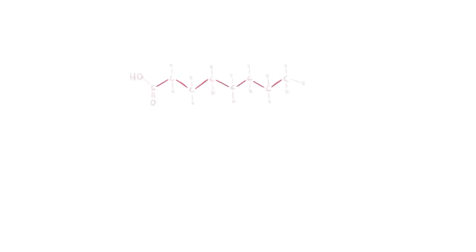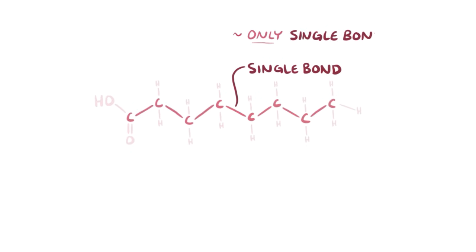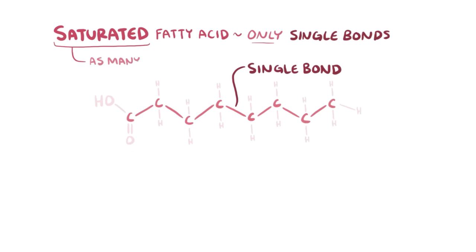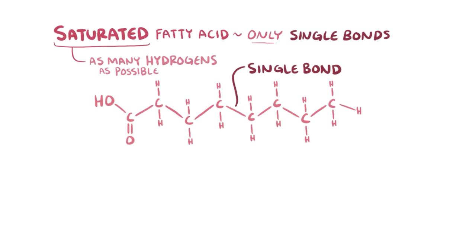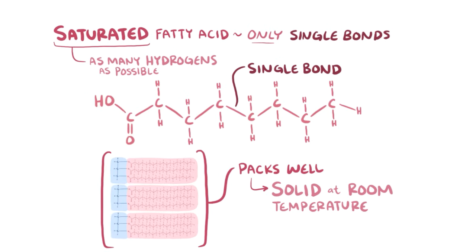Fatty acid chains are also categorized by the bonds connecting the carbons in the chain. A single bond is just one bond between the carbon atoms, and when a fatty acid chain has only single bonds, it's called a saturated fatty acid because it has as many hydrogen atoms as possible — or it's saturated with them. Triglycerides with saturated fatty acids are nice and straight, so they pack together really well, and as a result they're usually solid at room temperature. The longer the saturated fatty acid chain, the more likely it'll be solid at room temperature.